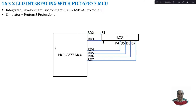We connect RD4, RD5, RD6, RD7 to D4, D5, D6, D7 of the LCD in 4-bit mode. D0 to D3 are not used so we ground them. The control line RS is connected to RD2 and enable is connected to RD3. RW bar line is grounded because the CPU is always going to write data to the LCD and we are not going to do any read operation.